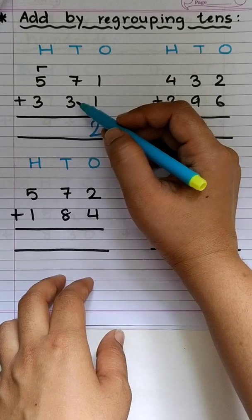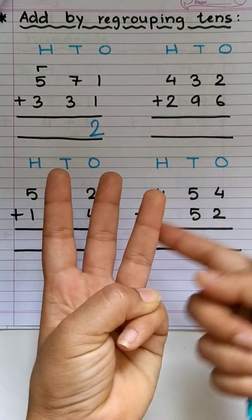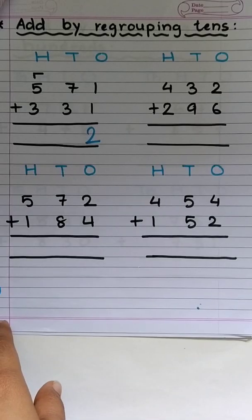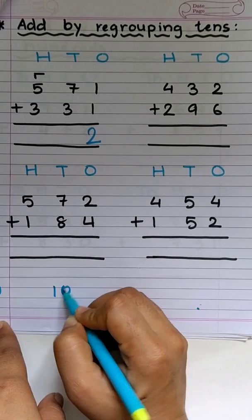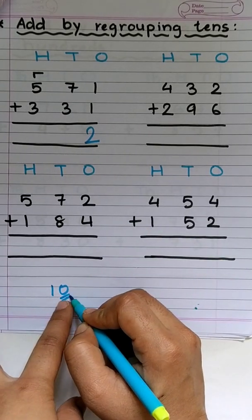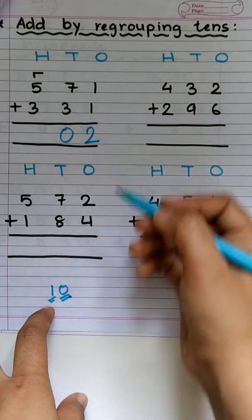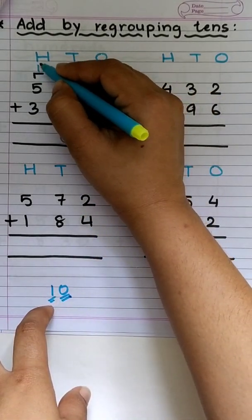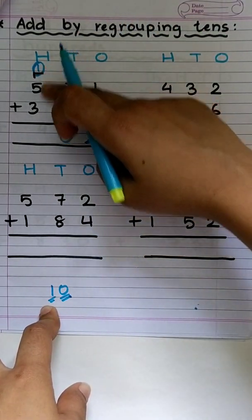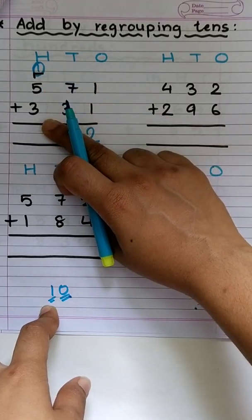Now 7 plus 3, 7 in the mind, 3 on finger, after 7, 8, 9, 10. Our answer is 10. It's a 2 digit answer. As you know, digit at ones place will go down and the other digit will go up. So we will add these 3. We will regroup these 3 and add, right?